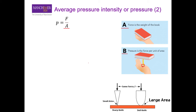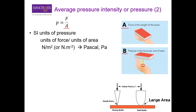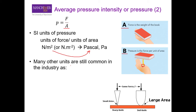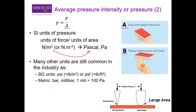The SI unit of pressure is Newton per meter squared. Newton is a unit of force and meter squared is a unit of area. In the SI system the more commonly used unit is the Pascal. As engineers we also use many other units of pressure — for example, in the British gravitational system, PSI (pound per square inch) and PSF (pound per square foot) — and then the metric system. When converting from one unit to another, we use conversion factors as discussed in the previous lecture.